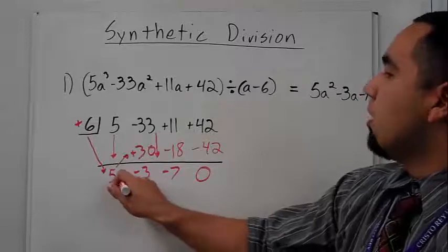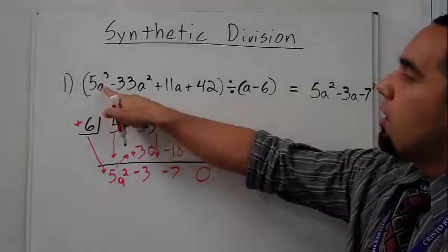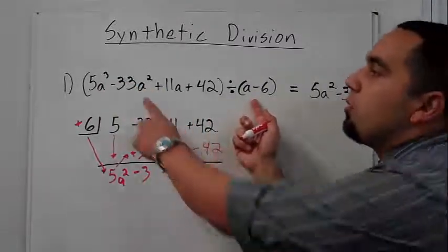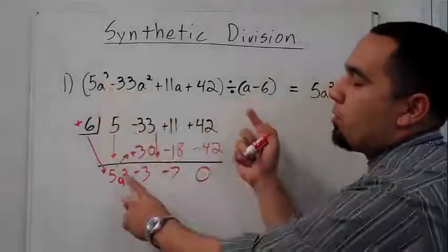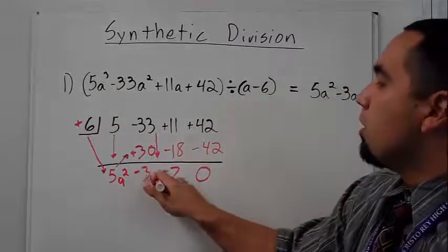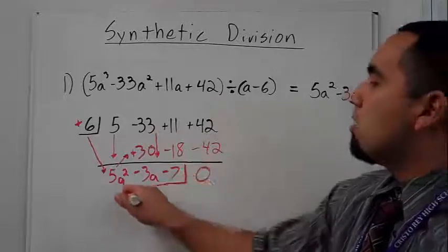So to finish up my answer, I know that it's going to be a squared because I started with a cubed, and I divided by one a. So I'm going to basically be subtracting one from my first term to give me what my new variable is going to be, or my new exponent, negative three a and minus seven.